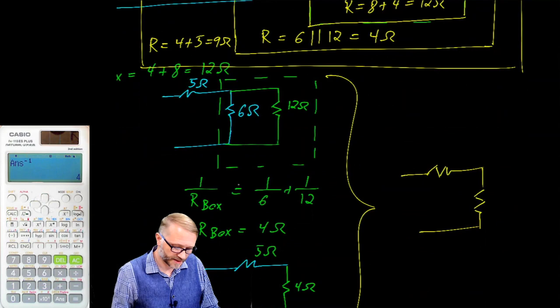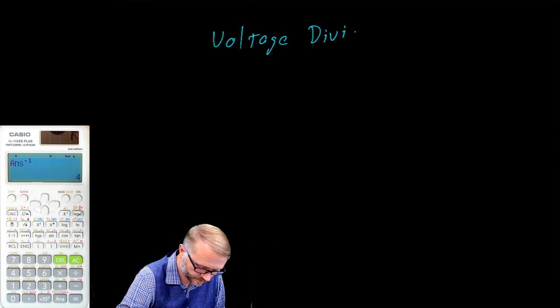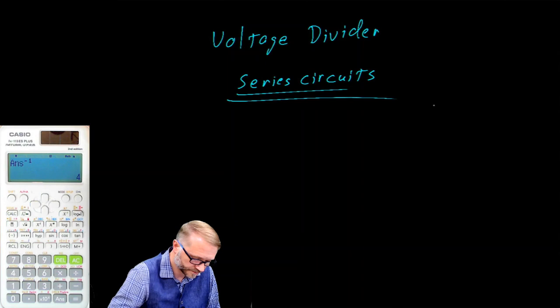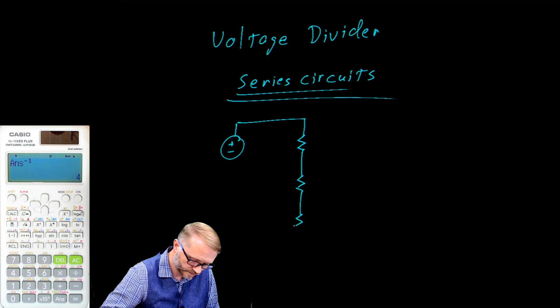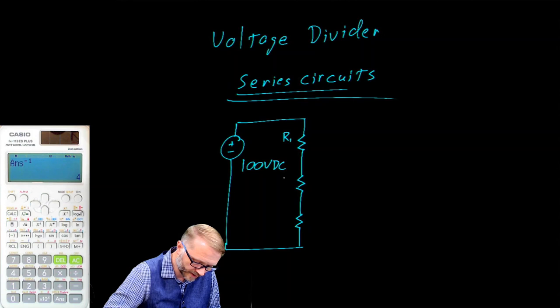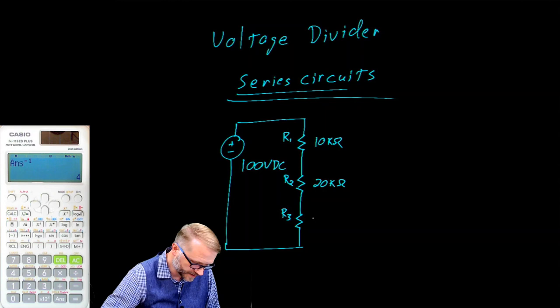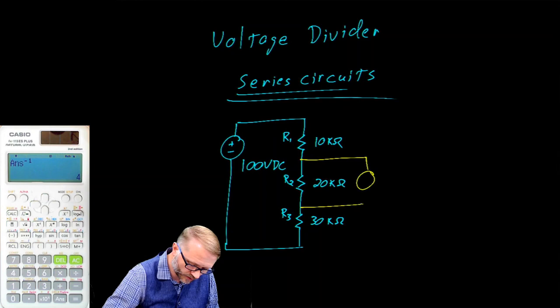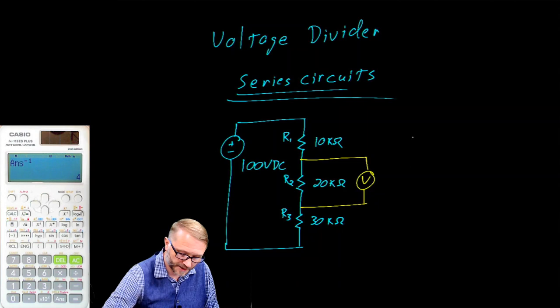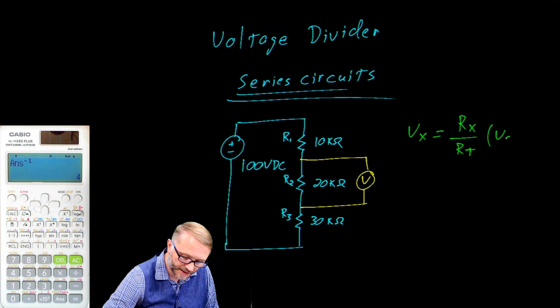Speaking of things that are useful, let's look at the voltage divider. This is applicable to series circuits. Here's a series circuit — we'll let the supply be 100 volts DC. We have R1, R2, R3, and we'll let those be 10k ohm, 20k ohm, and 30k ohms. Our objective is to find the voltage across R2. The voltage divider rule tells us that the voltage of interest is equal to the resistor of interest over the total series resistance, multiplied by the source voltage.